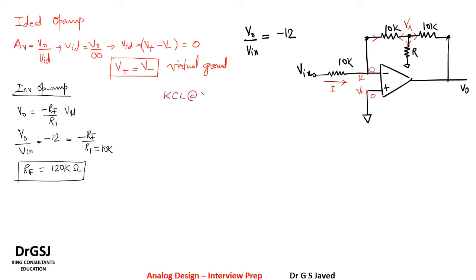So when you apply KCL at V_x, we get 0 minus V_x by 10k equal to V_x by R plus V_x minus V naught by 10k. Further, the current I flowing to the resistor 10k here is given as I equal to V in minus 0 divided by 10k.